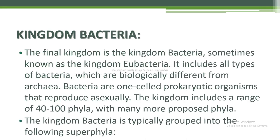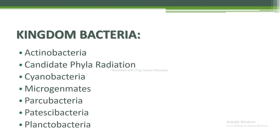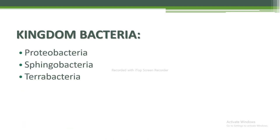The final kingdom is kingdom Bacteria, sometimes known as kingdom Eubacteria. It includes all types of bacteria which are biologically different from Archaea. Bacteria are one-celled prokaryotic organisms that reproduce asexually. The kingdom includes a range of 40 to 100 phyla with many more proposed. The kingdom Bacteria is typically grouped into the following super-phyla: Actinobacteria; Candidate Phyla Radiation; Cyanobacteria; Microgenomates; Parcubacteria; Patescibacteria; Planctobacteria; Proteobacteria; Saprospirobacteria; and Pterobacteria.